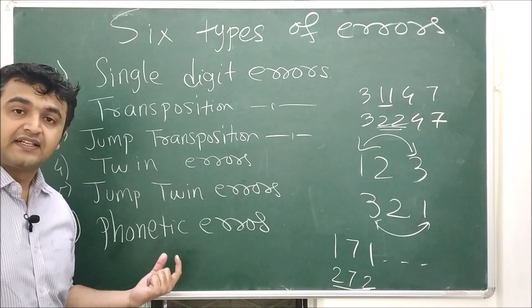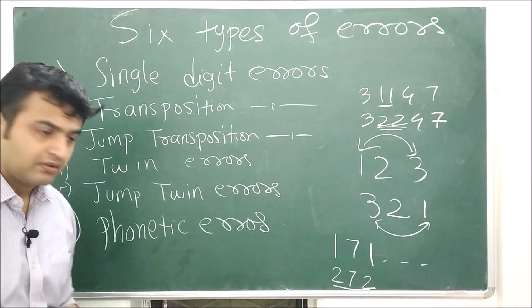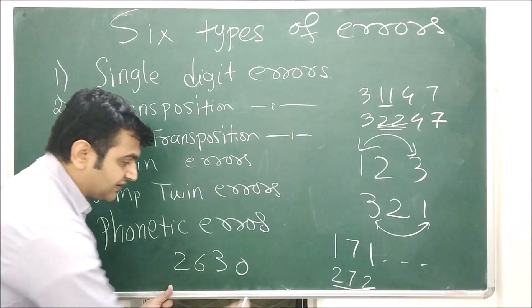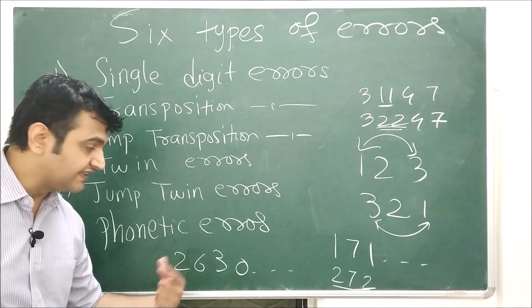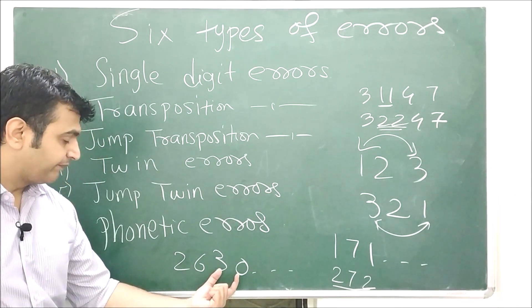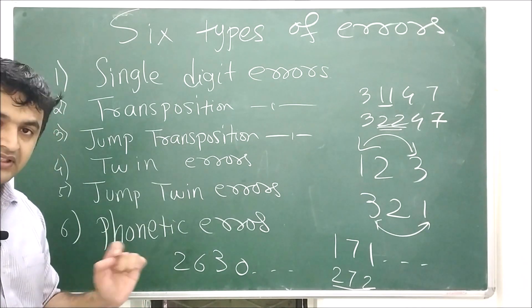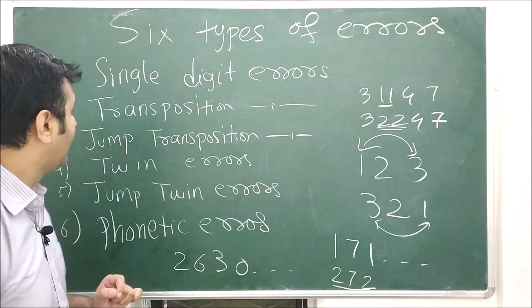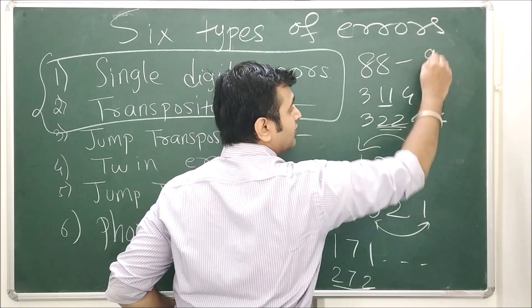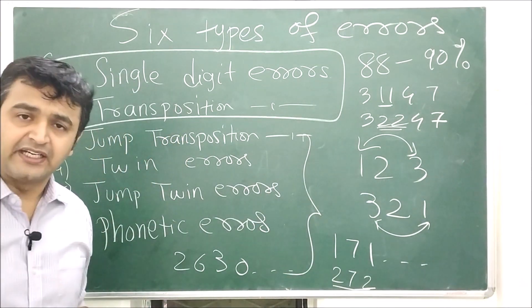The last type is called phonetic errors. For example, if I say to my colleague 'enter 2630', instead of hearing 13 they might hear 30. While listening, something gets misheard and the wrong number comes out. These are called phonetic errors. If you look at the analysis, the top 2 errors — single digit and transposition — account for around 88 to 90% of cases, while the remaining four types together account for only about 10% of cases.